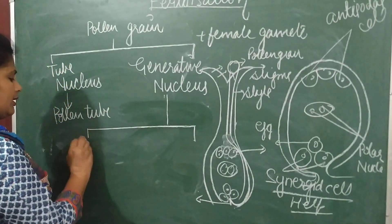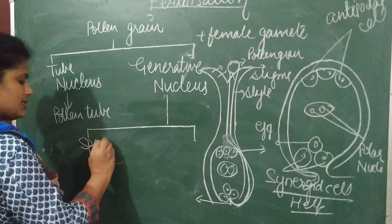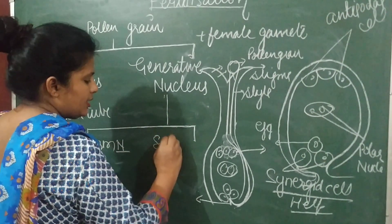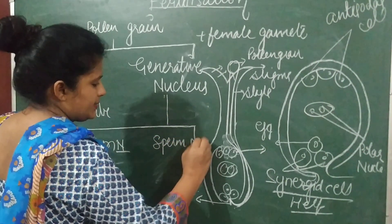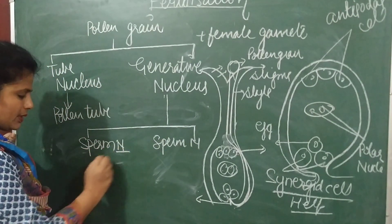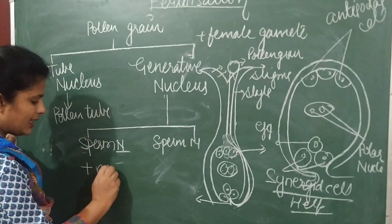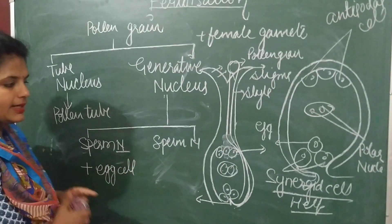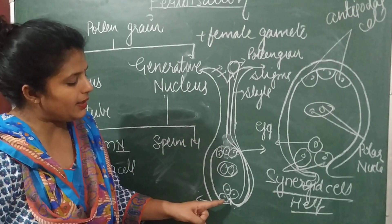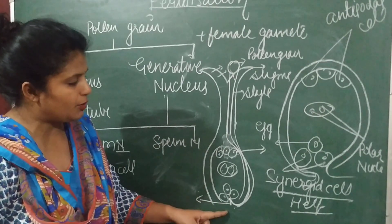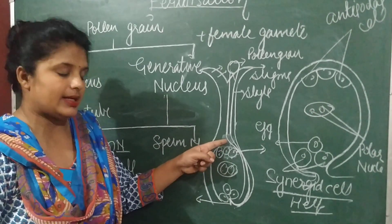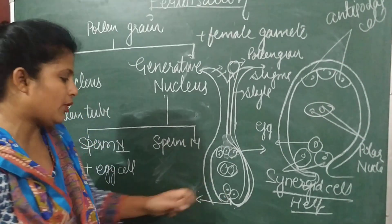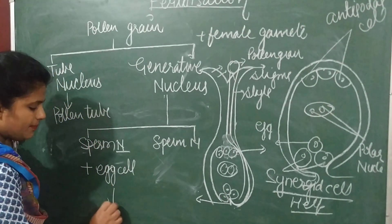The generative nucleus divides into two sperm nuclei. One sperm nucleus combines with the egg cell. The egg cell is located at the micropylar end — it is present on the micropylar end. This is a very important question.